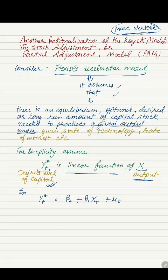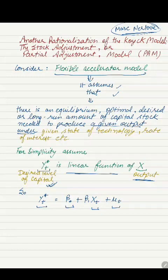If this is a linear function, then we can write it down in an equation. In equation form: Yt star, that is the desired level of capital, will be equal to beta 0, some constant, plus beta 1 Xt, where Xt is the level of output, plus Ut, which is an error term.